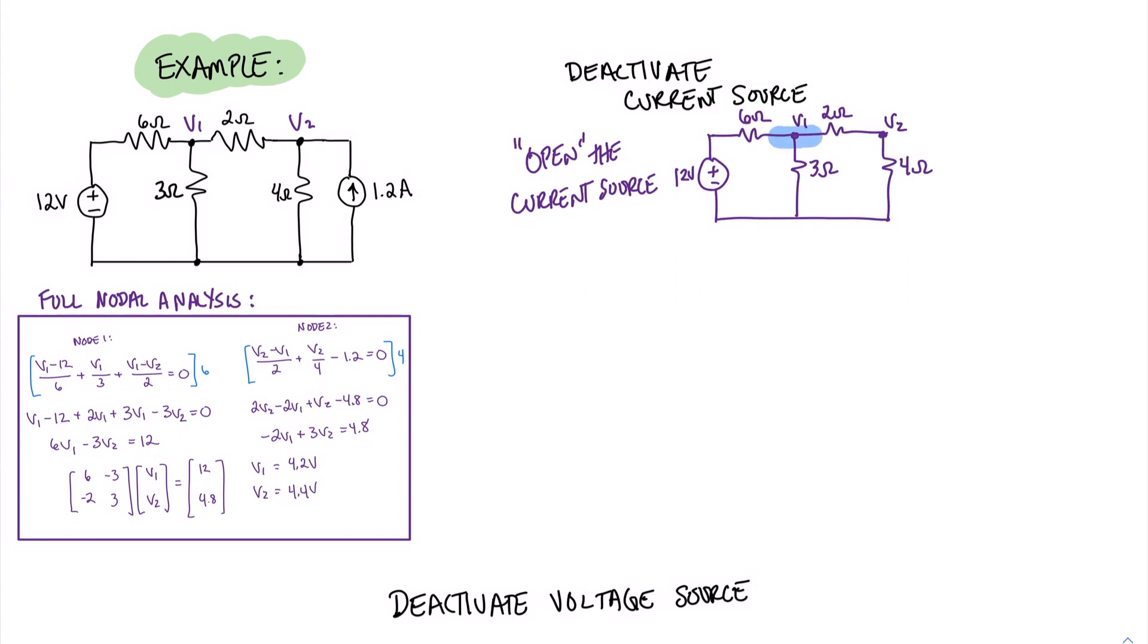The raw equation of KCL at that node would be V1 minus 12 volts divided by 6 ohms plus V1 over 3 ohms. And for our last term, we can do V1 divided by the sum of 2 ohms and 4 ohms. And all of these currents must equal zero. Now, in looking at this, I have 6 ohms, 3 ohms, and of course 6 ohms in the denominator. And therefore, I'm going to multiply all the terms by 6 in order to remove our fractions.